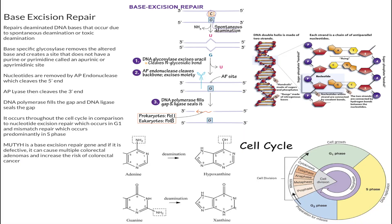In this video we're going to talk about base excision repair. Base excision repair repairs deaminated DNA bases, and this can occur due to either spontaneous deamination or toxic deamination. An NH2 group is removed during deamination, so that turns adenine into hypoxanthine, or guanine into hypoxanthine. The big picture is that base excision repair will repair damaged DNA.